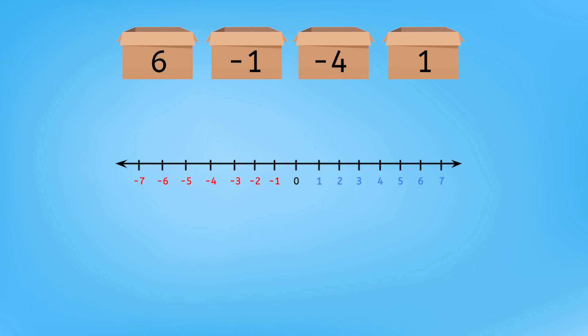Let's try placing some integers on the number line. Six is a positive number, so it'll be six units to the right of zero. Negative one is a negative number, so it will go one unit to the left of zero. Negative four is also negative, so it will go four units to the left of zero. And one is also positive, so it goes one unit to the right of zero.